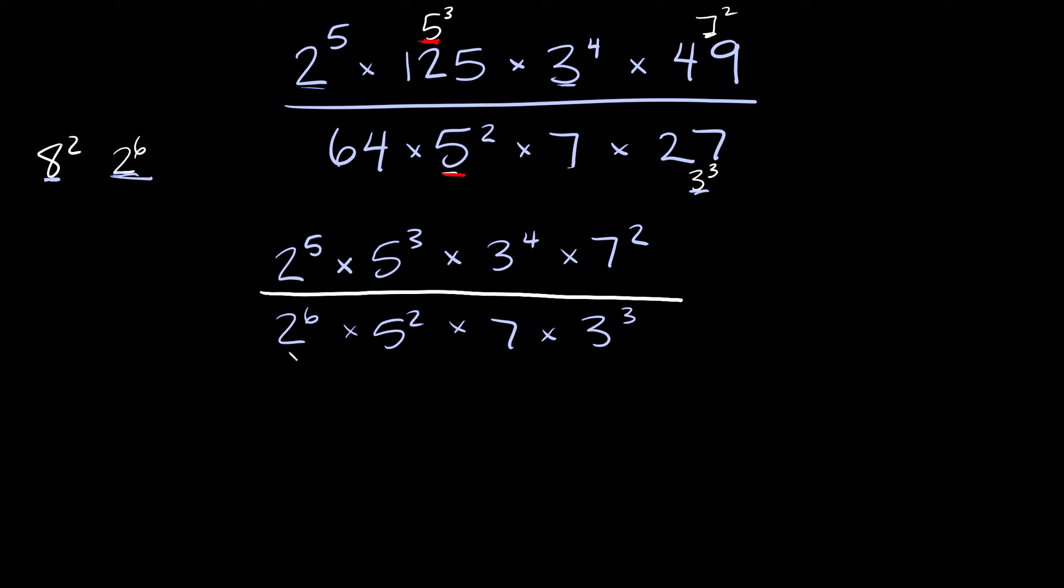On top we have 2 to the fifth, on the bottom we have 2 to the sixth. In other words on top we have 5 2's and on the bottom we have 6 2's. So 5 of these 2's are going to kill 5 of these 2's on the bottom, so we're only gonna have one left. We had 6 but we killed 5 of them so there's only one left, so we're gonna have a 2 on the bottom.